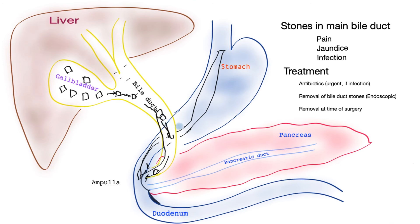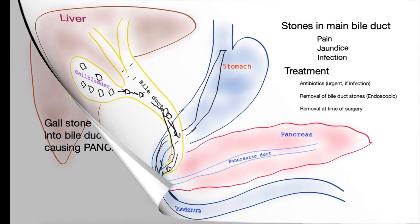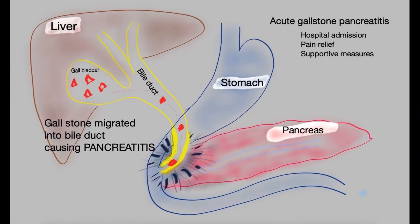Acute gallstone pancreatitis occurs when gallstones migrate out of the gallbladder and one travels down the bile tube, inciting the pancreas to become very inflamed. This is a very painful condition and patients frequently end up in hospital. The pain is significantly different from acute biliary colic — it tends to be more in the middle of the abdomen and going towards the back. In hospital, pain relief and supportive measures are provided, and rarely this condition can progress and cause serious complications.